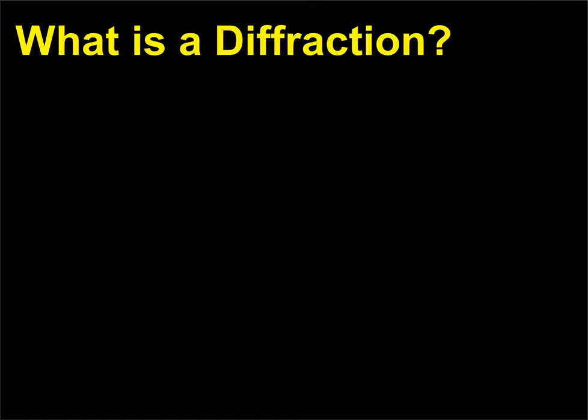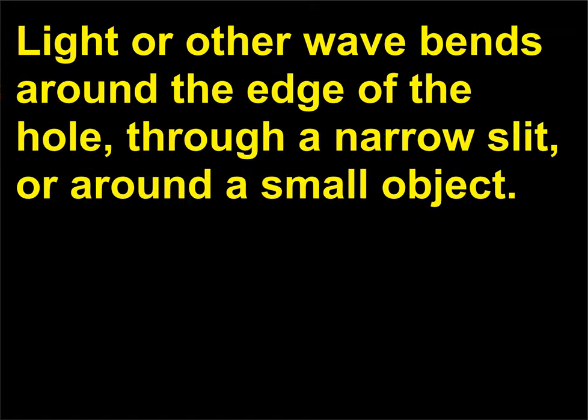What is diffraction? Diffraction occurs when light or another wave bends around the edge of a hole, through a narrow slit, or around a small object.